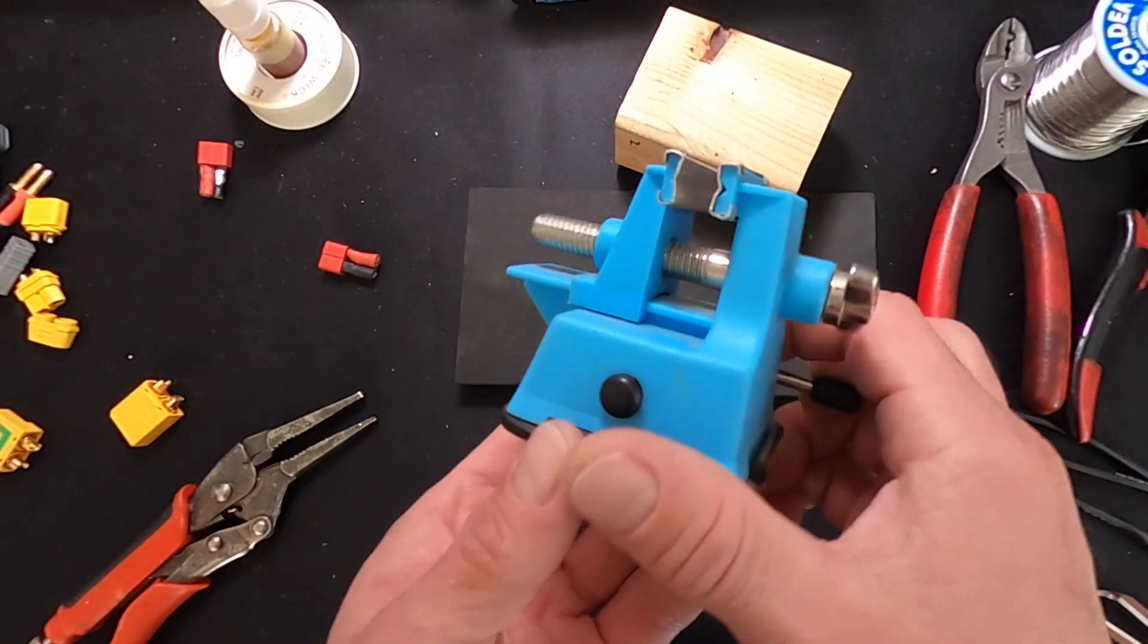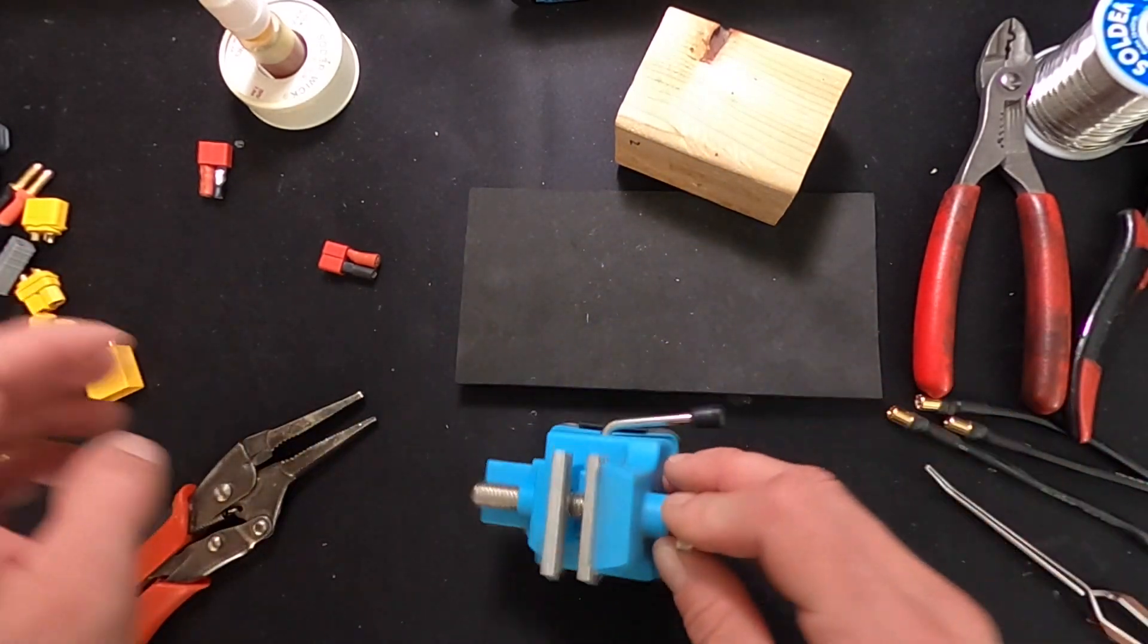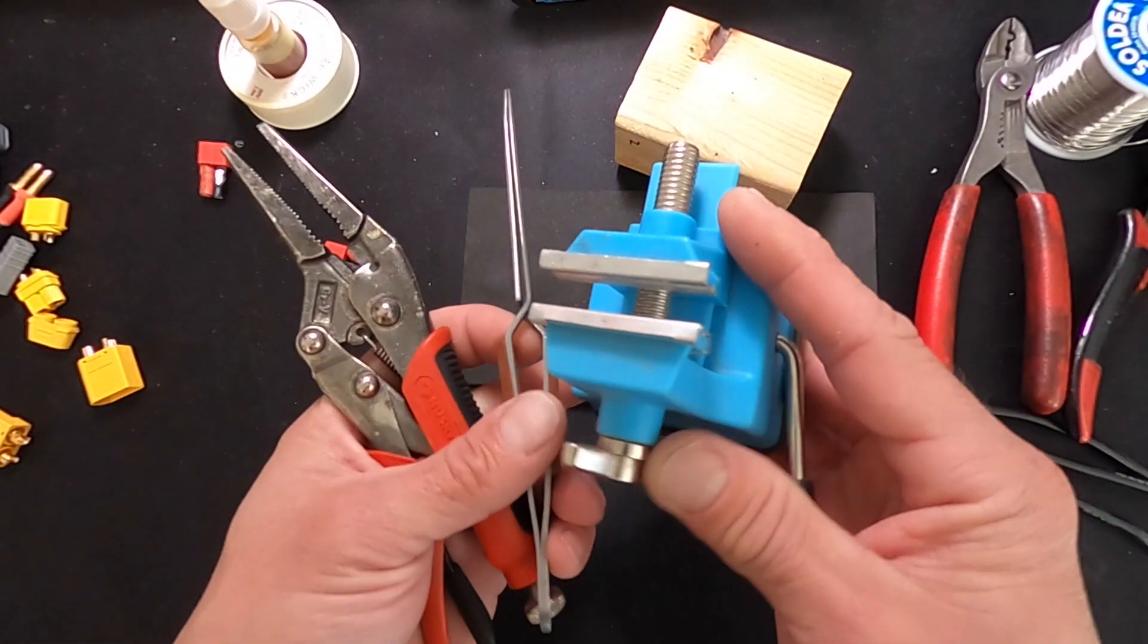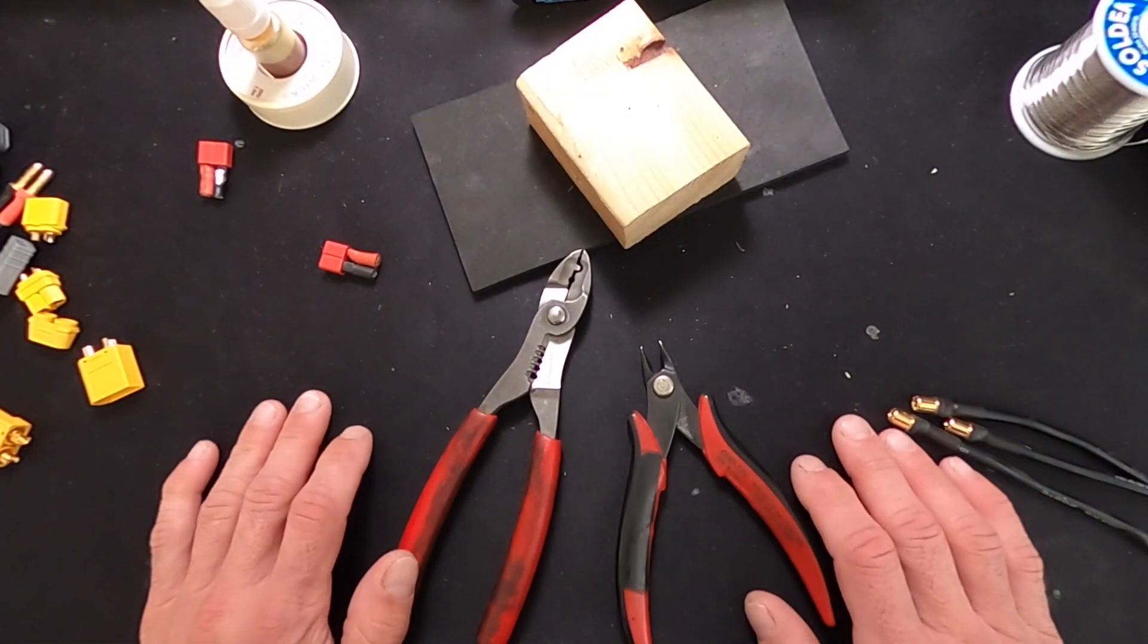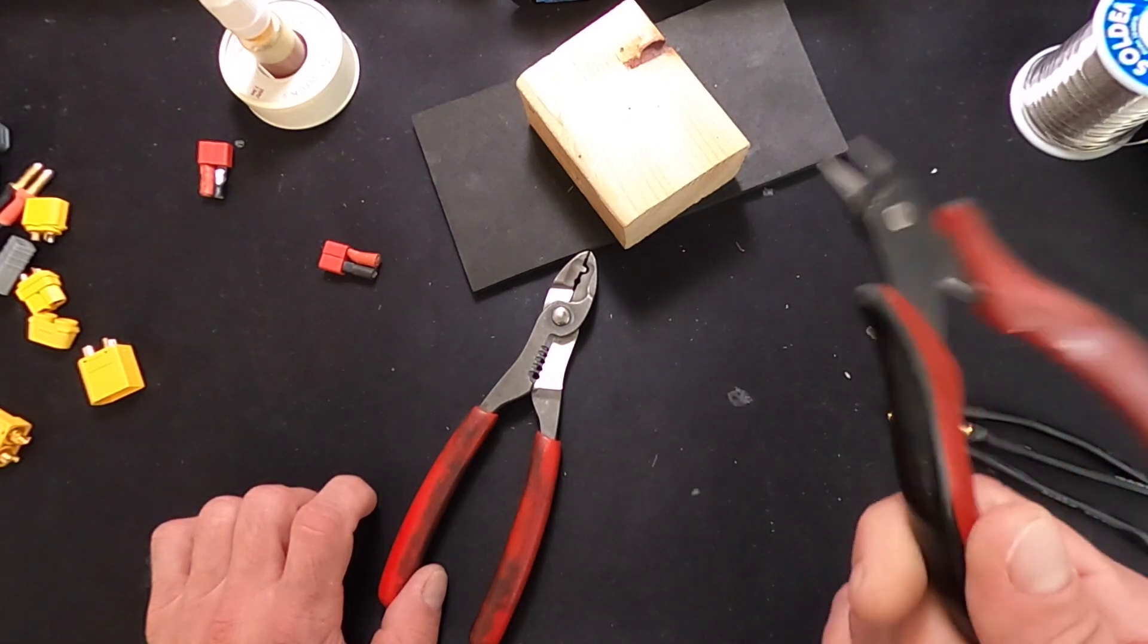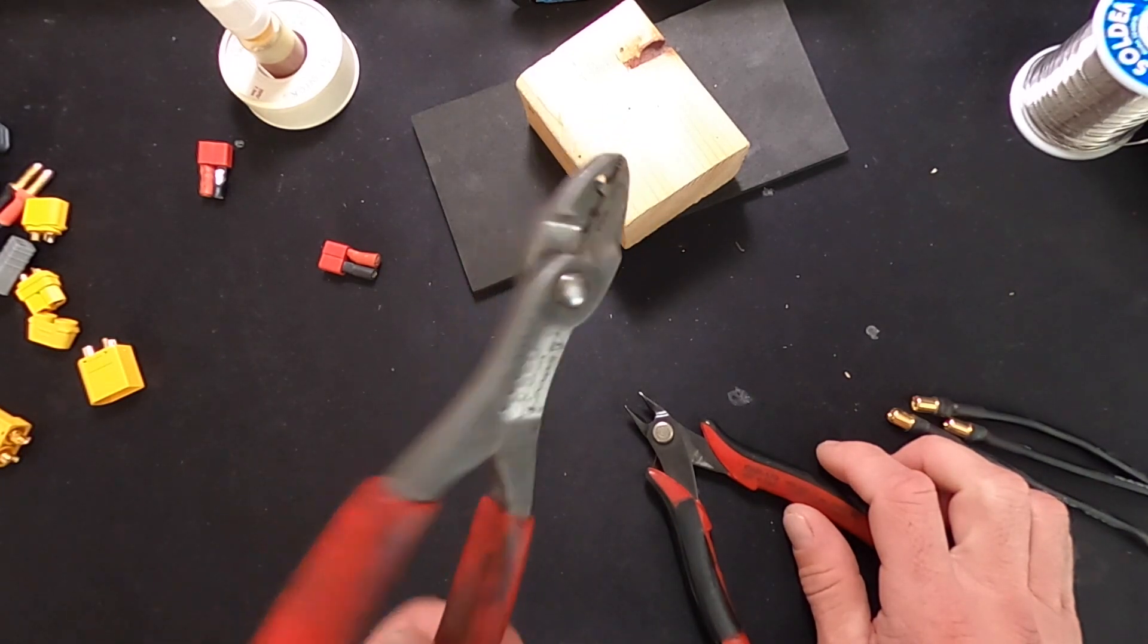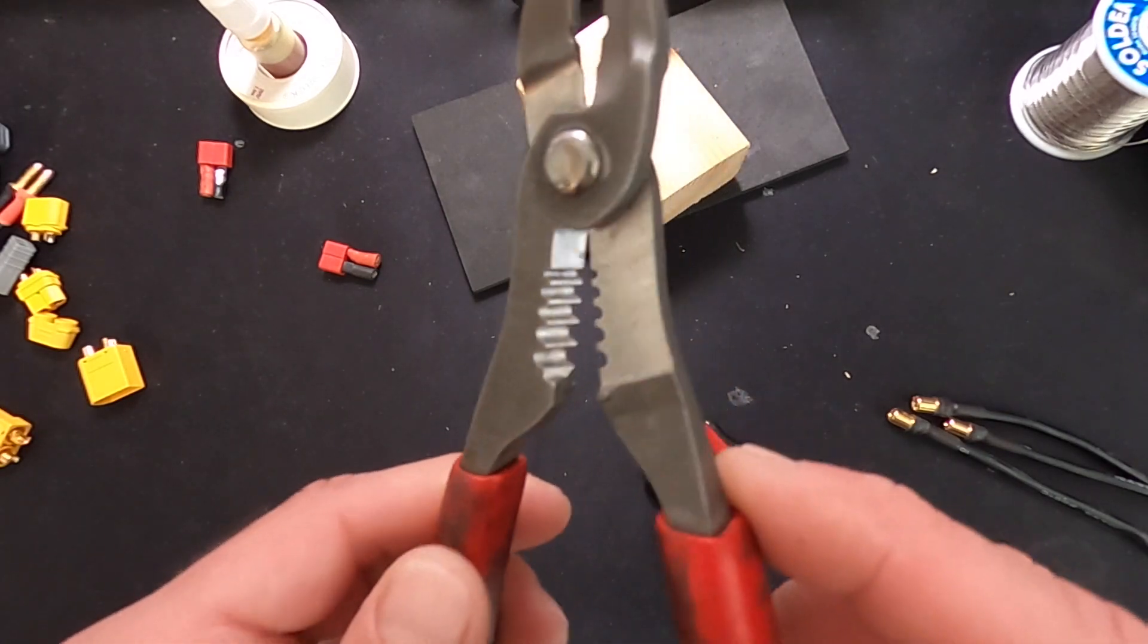Vice grips, and then the benchtop one that I like a lot is a little tiny clamp. You can use this to hold onto speed controls while you're soldering onto them or hold onto your plugs as well. Two very important tools in your arsenal should be a set of wire-only flush cutters that you only use for cutting your electric wires in your RC cars and a pair of nice wire strippers.